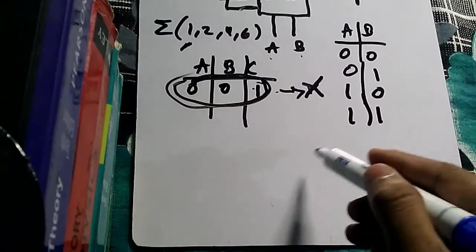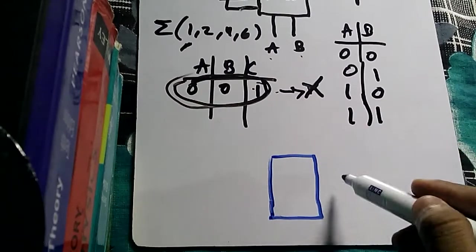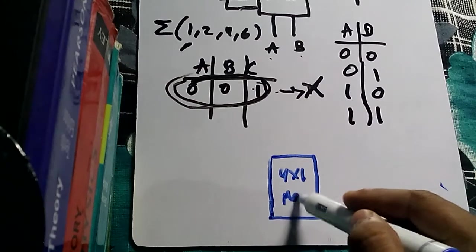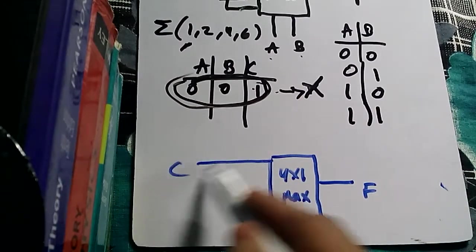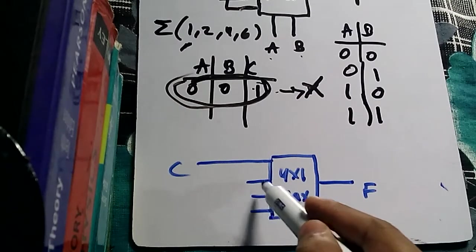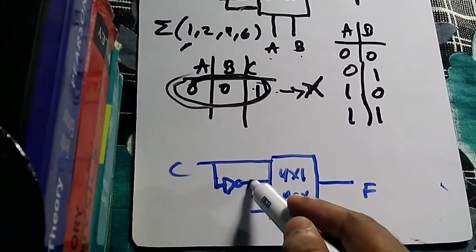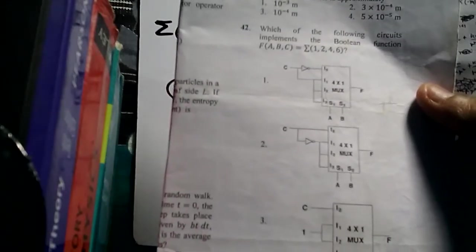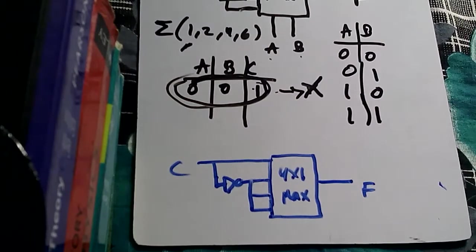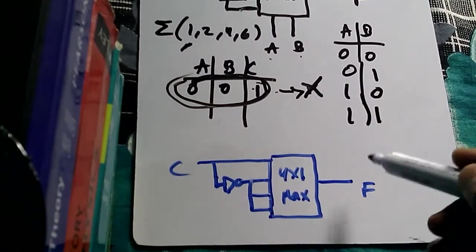Now let's check the second option. Let me draw the diagram. The second option also contains a four-by-one multiplexer with one output and four inputs. The input from C goes to the second terminal through a NOT gate, and the same data goes to the other inputs as well.